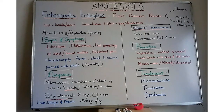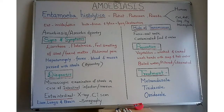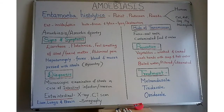Transmission takes place when flies sit on the fecal matter of an infected person and then contaminate food and water. When a healthy person drinks or eats the contaminated food and water, transmission takes place. This is how Entamoeba histolytica is transmitted from an infected person to a healthy person.